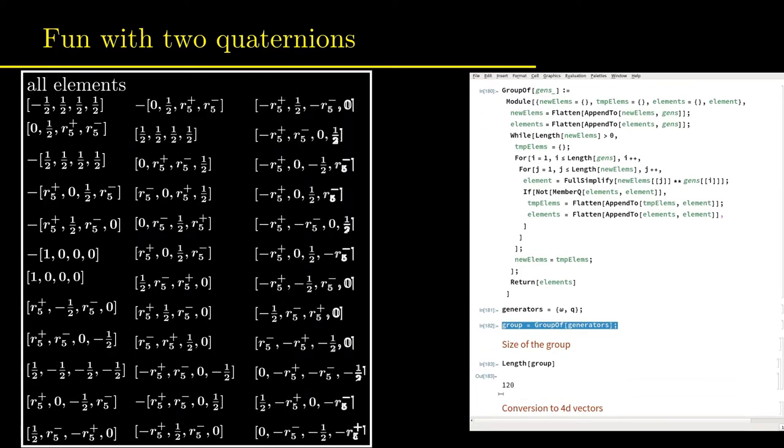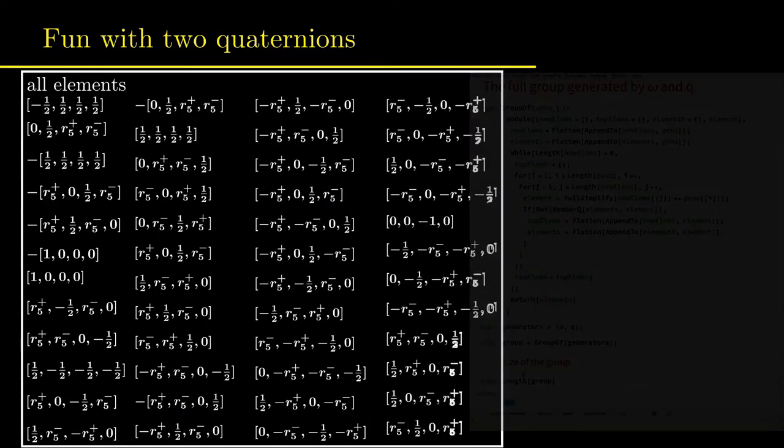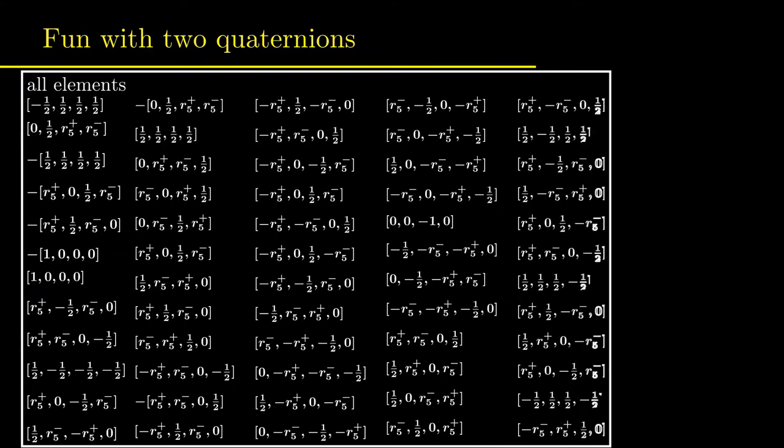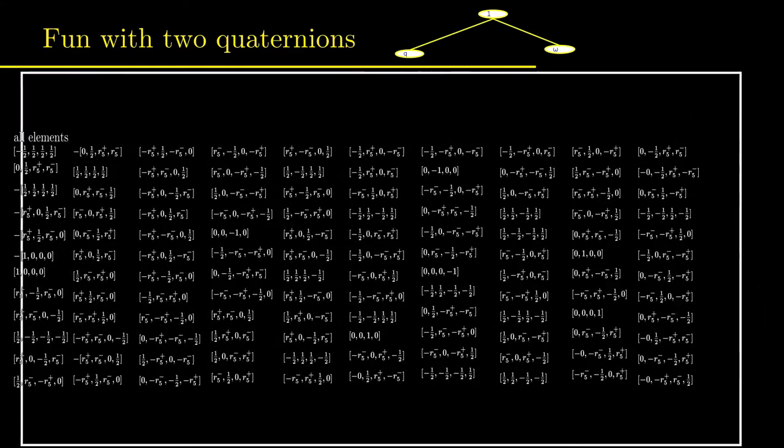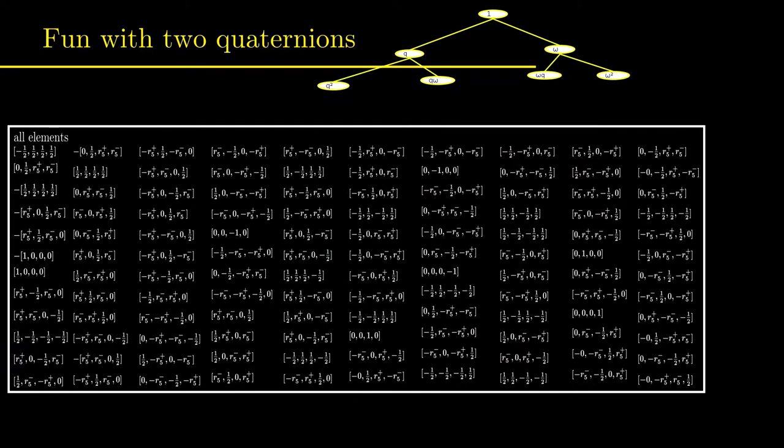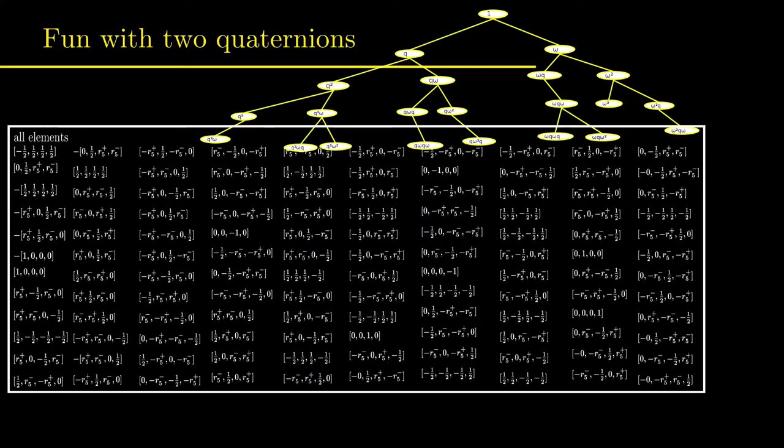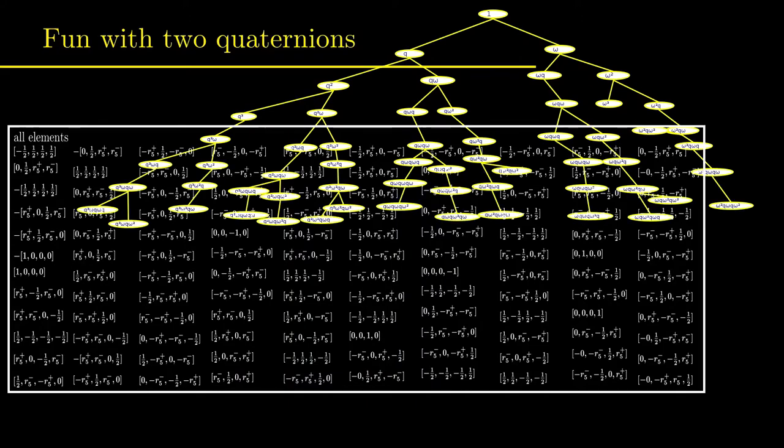The construction process can also be visualized by a tree that is shown here. Each new branch corresponds to a multiplication with omega or q. Each level of the tree corresponds to the newly generated quaternions. In the first level there are two nodes, in the second there are four, then seven and so on.